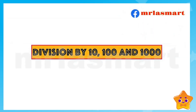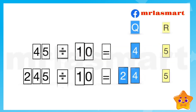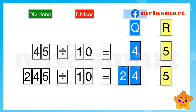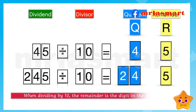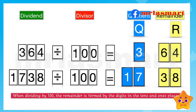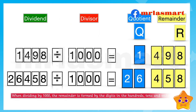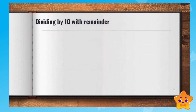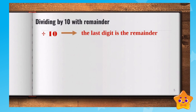Division by ten, one hundred, and one thousand — with remainder. When dividing by ten, the remainder is the digit in the ones place. When dividing by one hundred, the remainder is formed by the digits in the tens and ones places. When dividing by one thousand, the remainder is formed by the digits in the hundreds, tens, and ones places. So in dividing by ten with remainder, the last digit is the remainder.